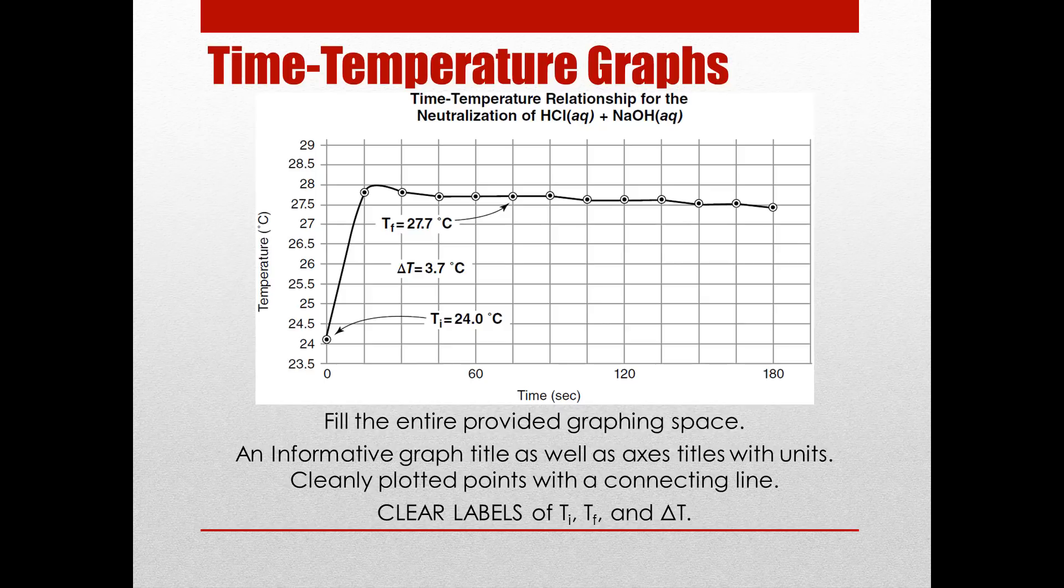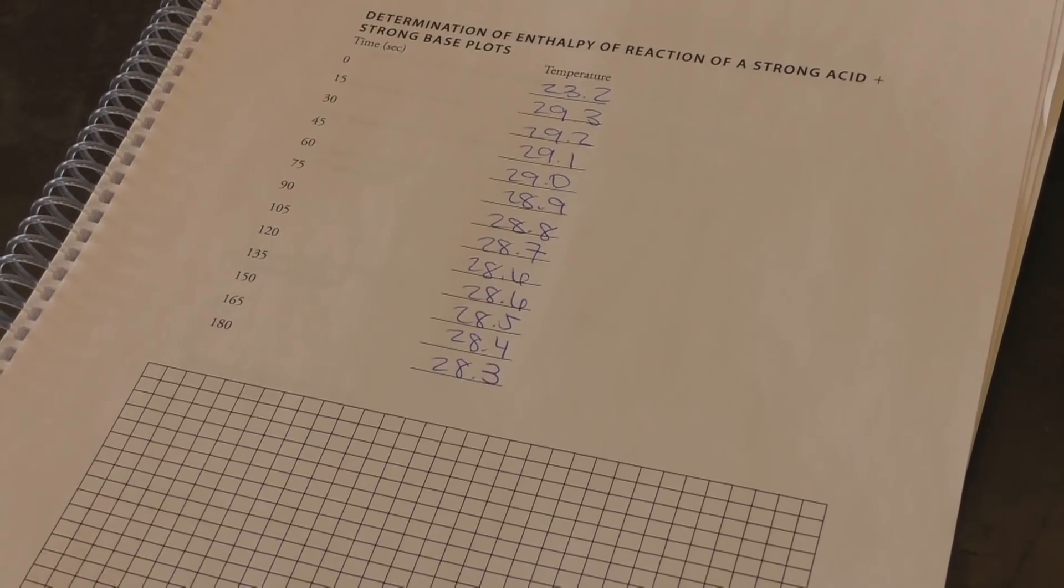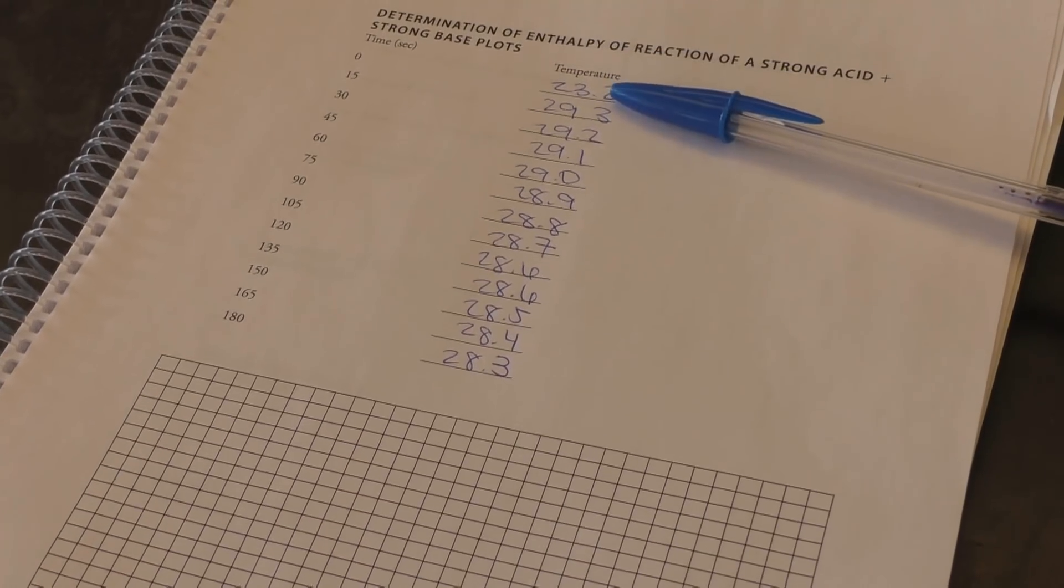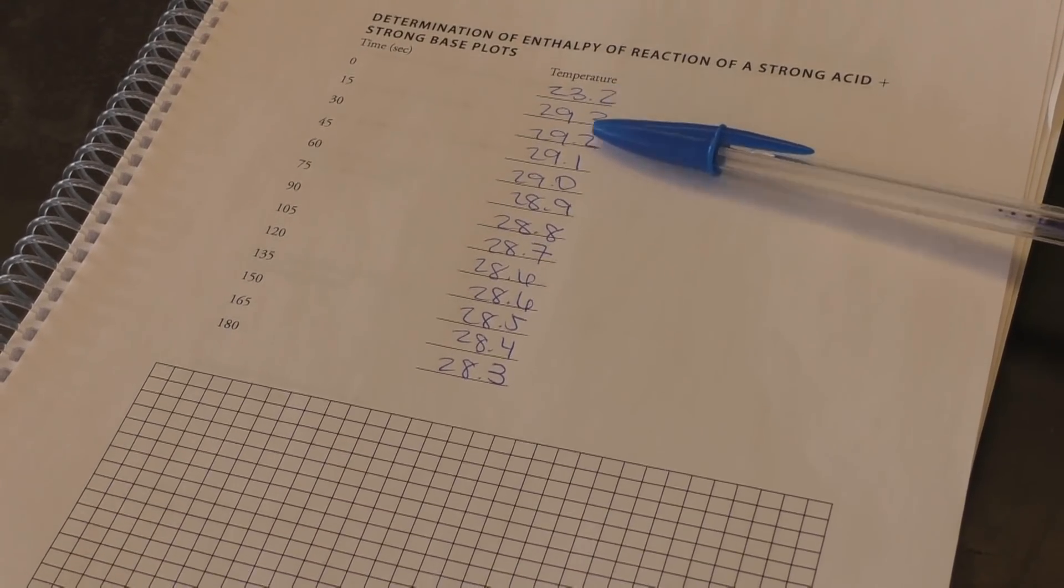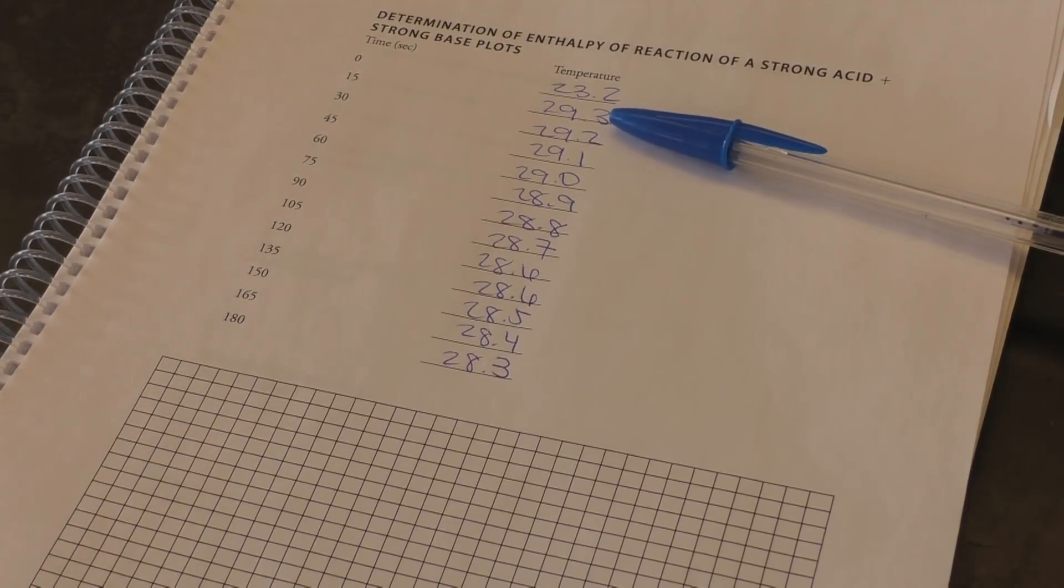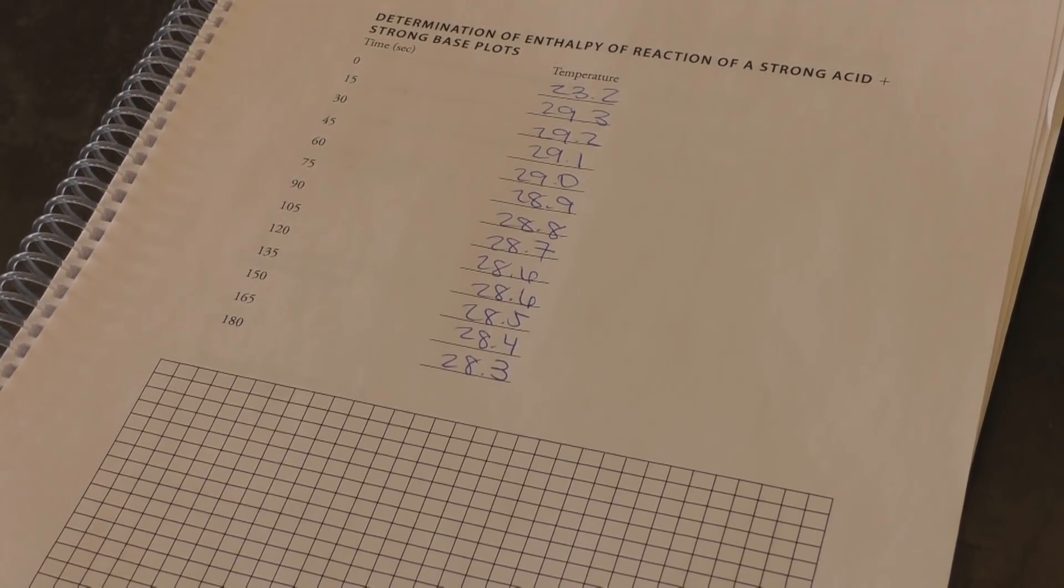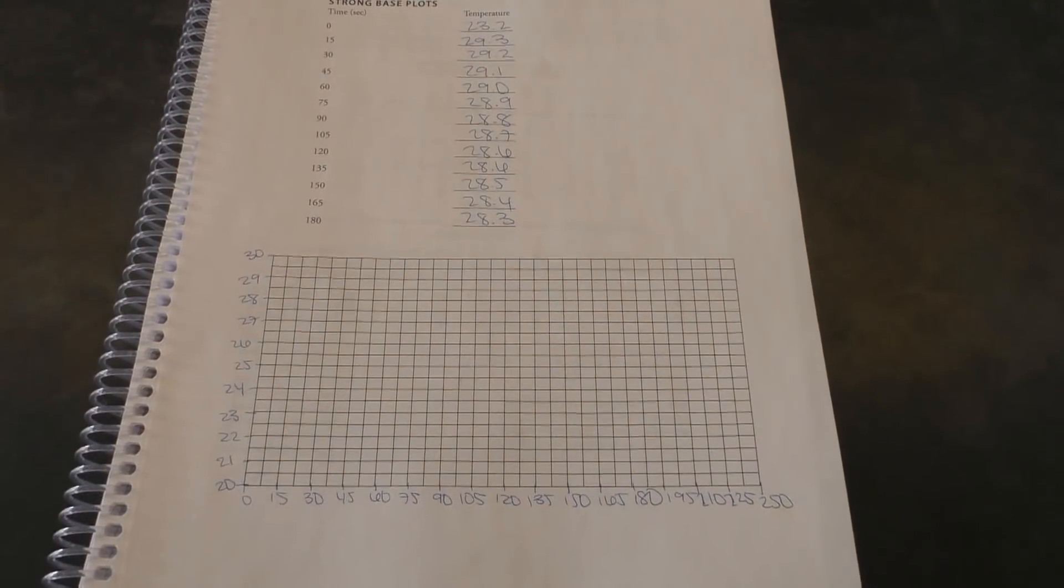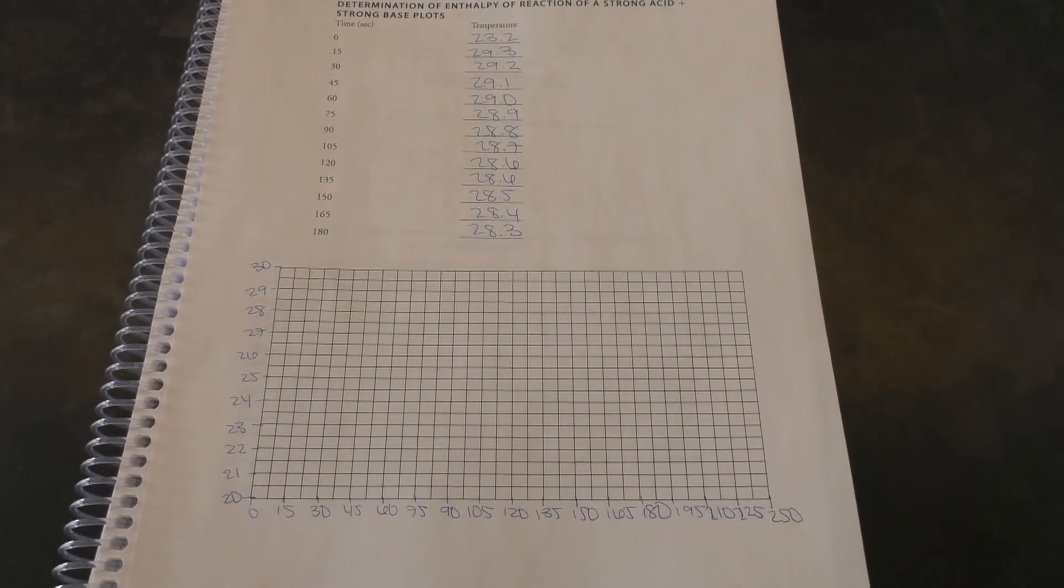Cleanly plotted points with a connecting line, and clear labels of TI, TF, and delta T. To get started with graphing, you'll need to first figure out the appropriate intervals of your axis that your graph takes up the entire area. Our data has a maximum of 29.3 and a minimum of 23.2 degrees Celsius, and a maximum of 180 seconds.